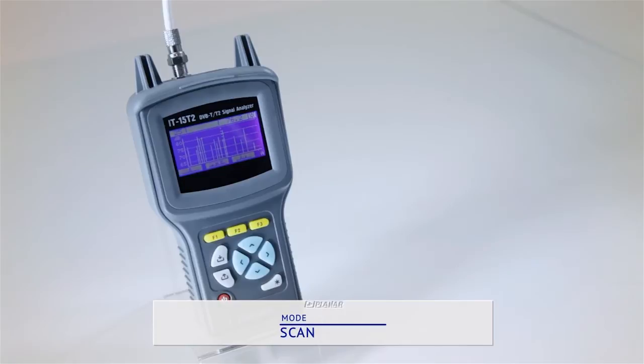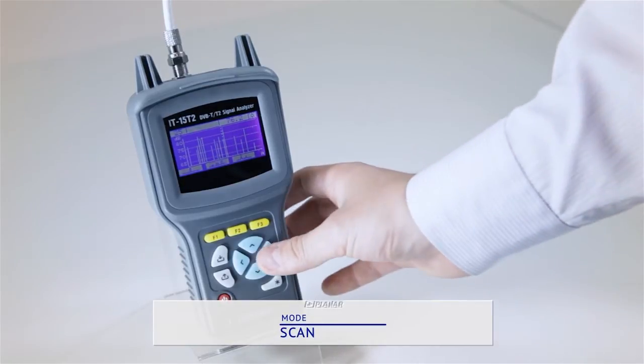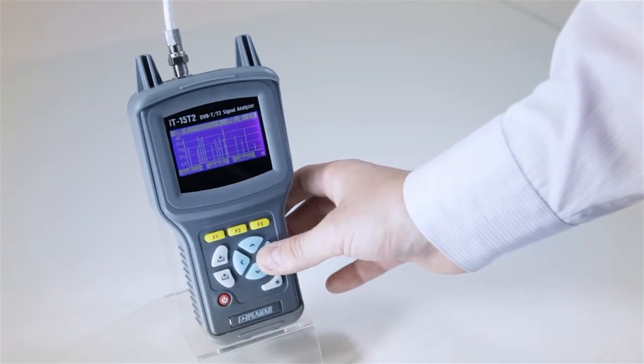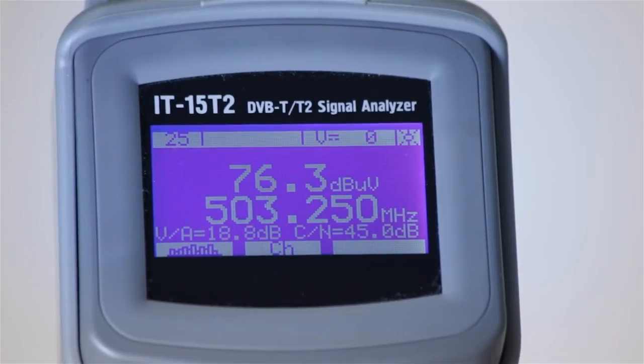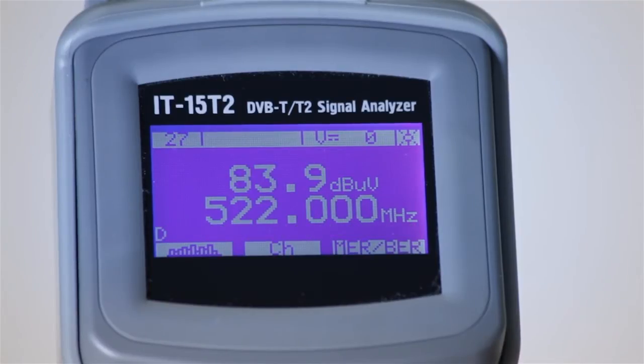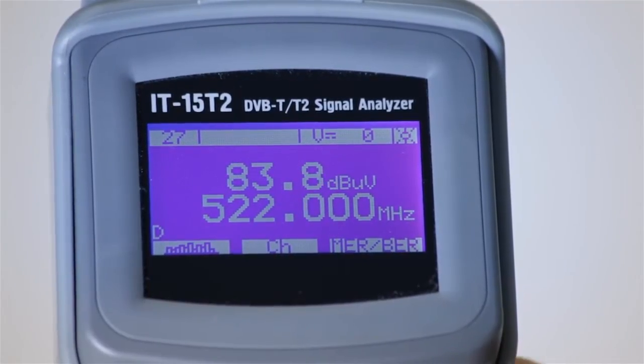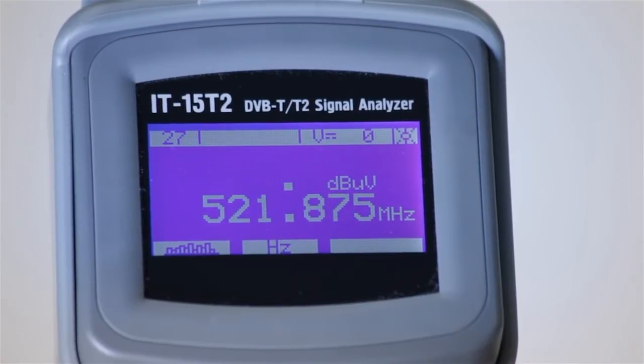The first mode is scan. Once you enter the scan mode, the instrument will automatically search for channels and determine their types, analog or digital, as indicated by an A or D character. The instrument will also check the components of the input TV signal and measure the channel level in real time.